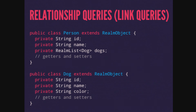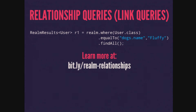If we want to query those relationships, we can do that inside of Realm — these are called link queries in the documentation. For example, with the Person and Dog objects, we can query: find all users whose dogs' name is equal to Fluffy. That gives back all users who have a dog named Fluffy. There are many advanced link queries you can chain together. Check out bitly/Realm-Relationships for tons of good information.